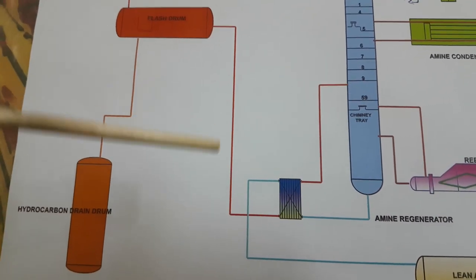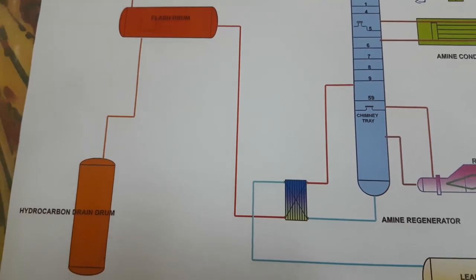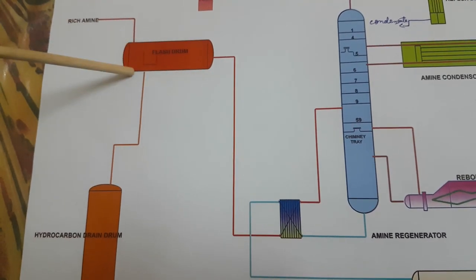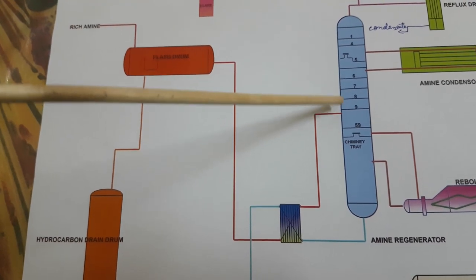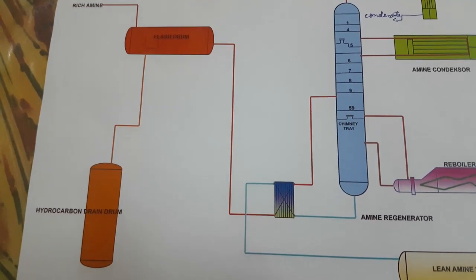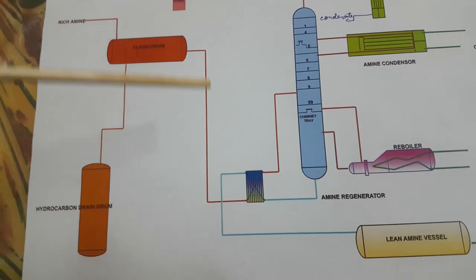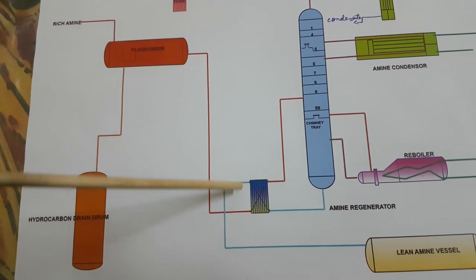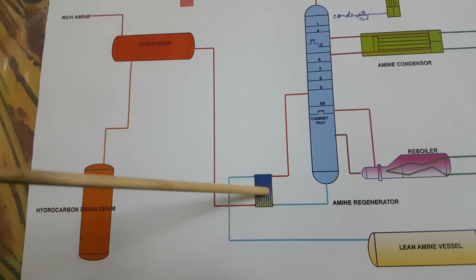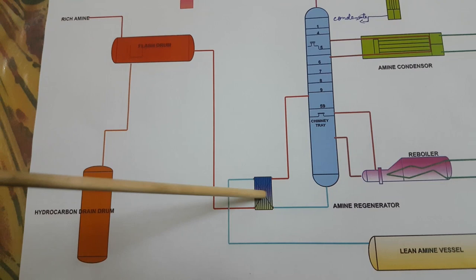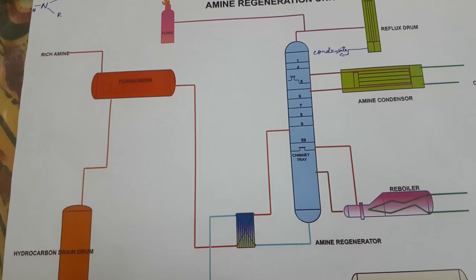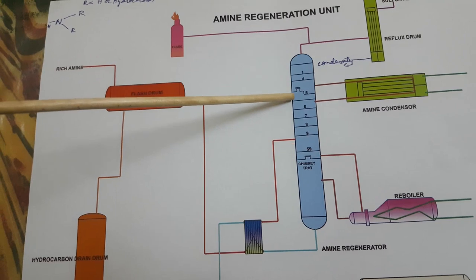Now let's go for the interchanger. The temperature of rich amine may be lower — around 50°C — compared to the lean amine inside the stripper, which may be around 120 to 130°C. We need to reduce the lean amine temperature before sending it to lean amine storage, so we use the lean amine–rich amine interchanger. Rich amine flows through one plate and lean amine through another, so both interchange heat. The amine going to the stripper gets preheated.